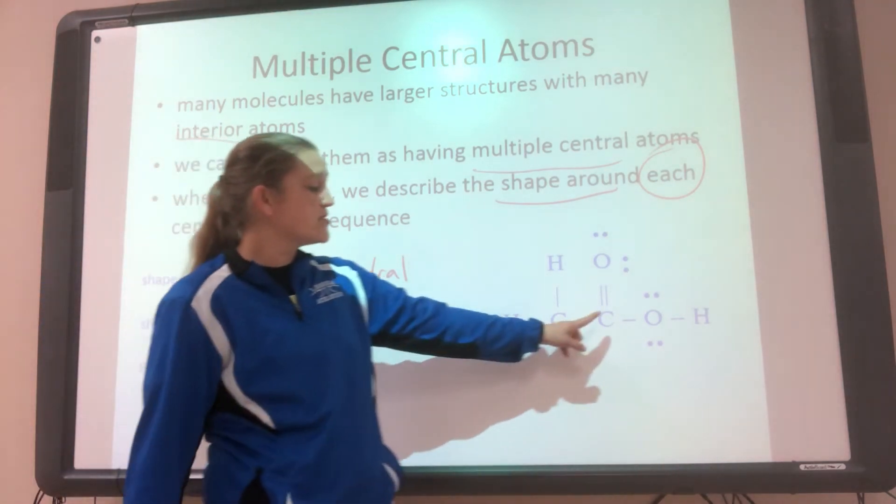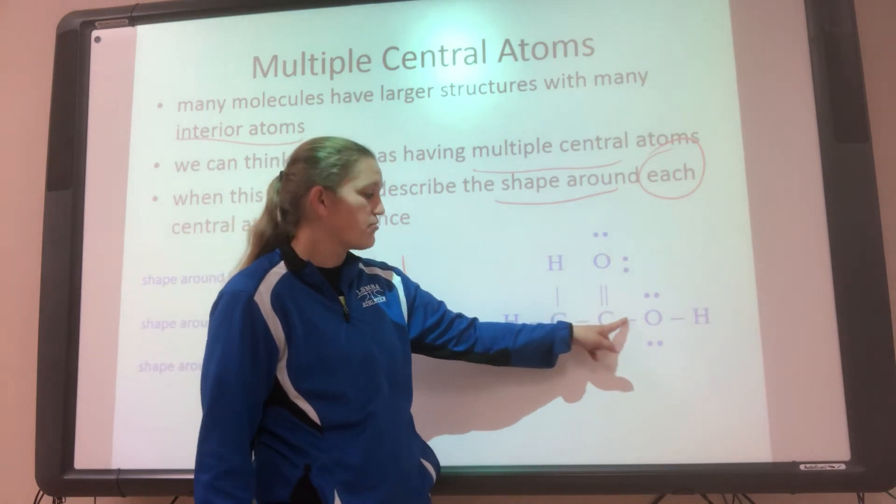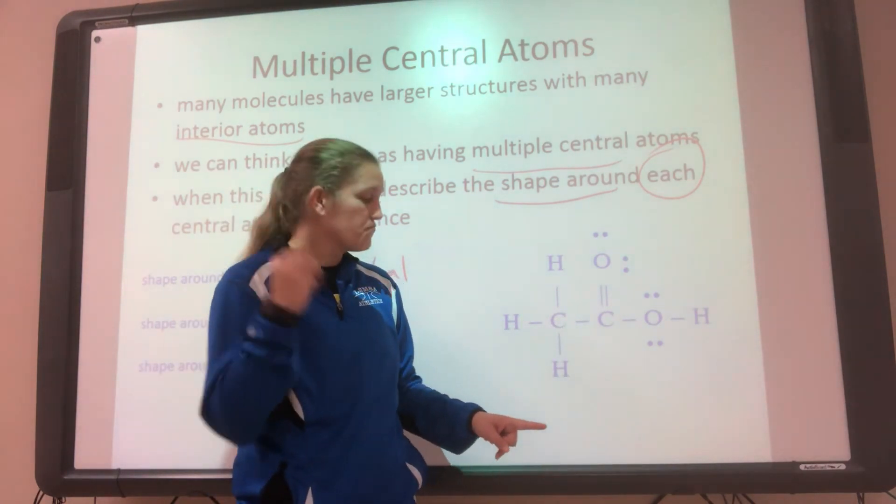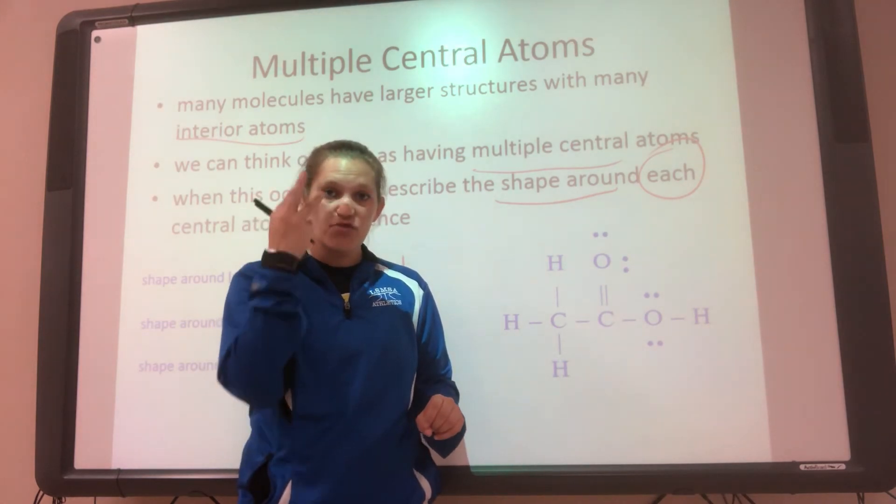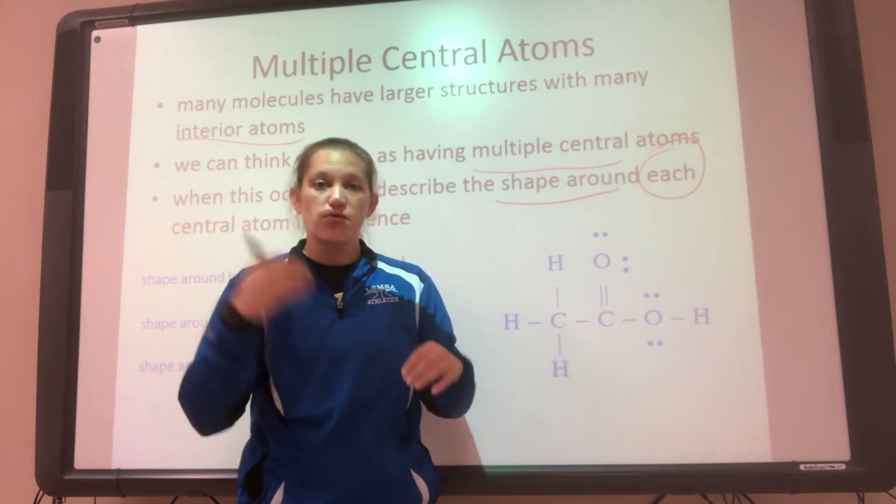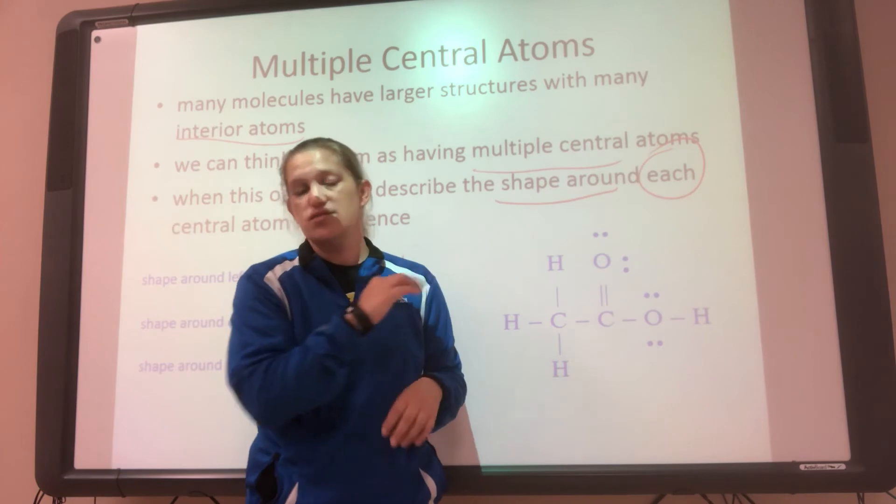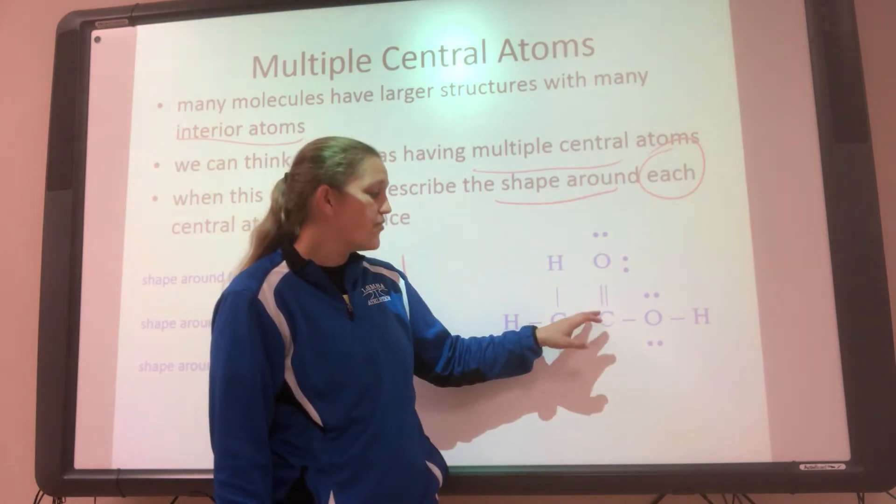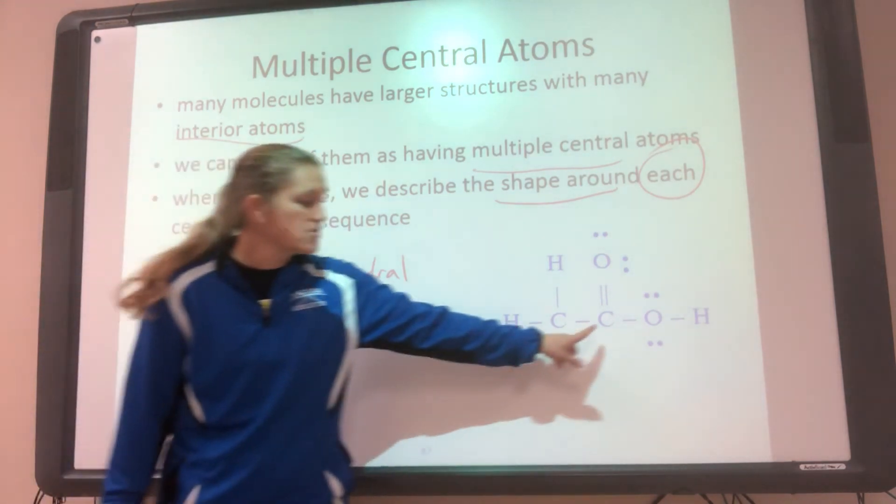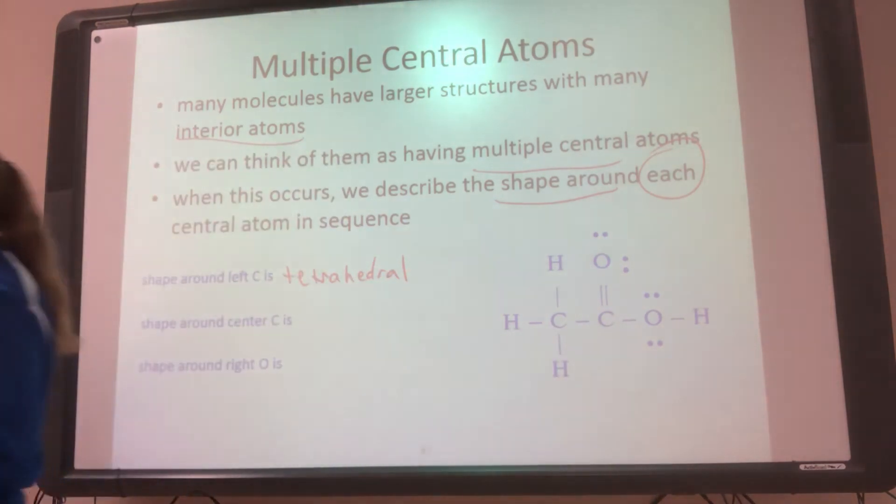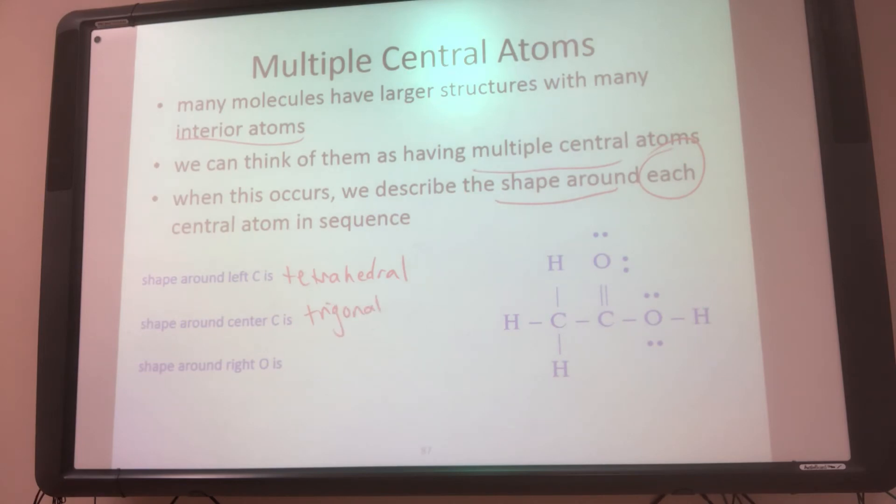Then we go here. How many things are on this central atom? We say one, two, three. Three electron groups. They're all bonds. So this is three electron groups, three bonds, zero. So a three, three, zero, if you're looking at the table. So if you looked at the table for a three, three, zero, this is trigonal planar. So around this carbon, it's trigonal planar.